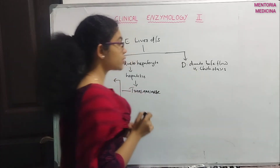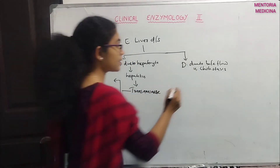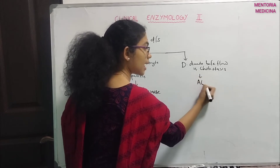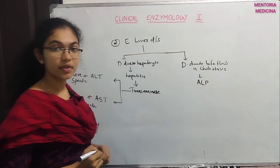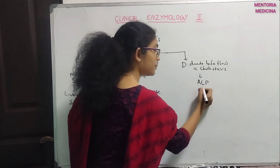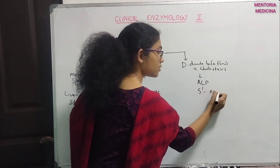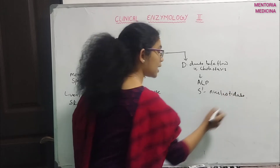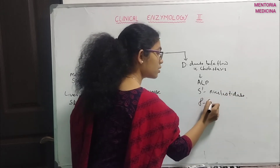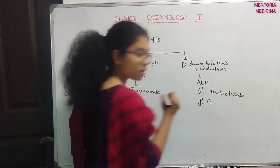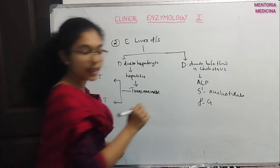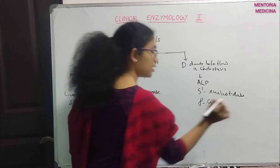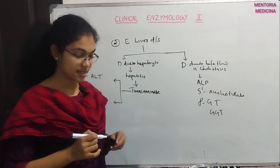For damage due to bile flow, the enzymes used are alkaline phosphatase, 5'-nucleotidase, and gamma glutamyl transpeptidase (GGT).